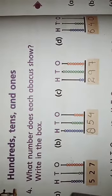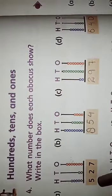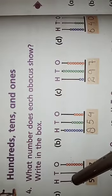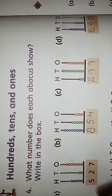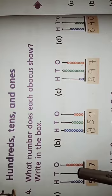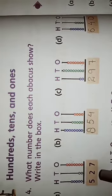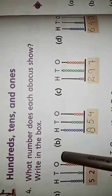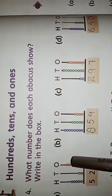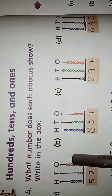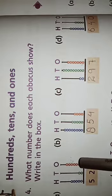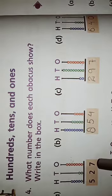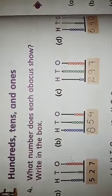In the first part, count the beads and write the number. In the hundreds column, count the beads: 1, 2, 3, 4, 5 — there are 5 beads, so write 5. In the tens column: 1, 2 — there are 2 beads, so write 2. In the ones column: 1, 2, 3, 4, 5, 6, 7 — there are 7 beads, so write 7.